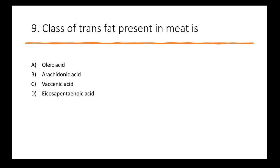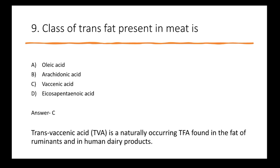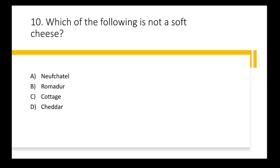Next question: the class of trans fat present in meat is — options are oleic acid, arcedenoic acid, vaccenic acid, and icosapentaenoic acid. The right answer is option C — vaccenic acid. Vaccenic acid is a naturally occurring trans fatty acid present in ruminants and some human dairy products.